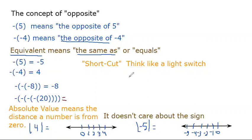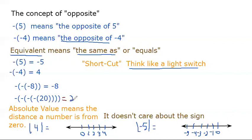A lot of times we think of it as a light switch. One negative makes a negative. The second negative switches to a positive. The third negative switches it back to a negative. You go from left to right: negative, positive, negative, positive — just like a light switch. So for that problem, the answer would be a positive 20.